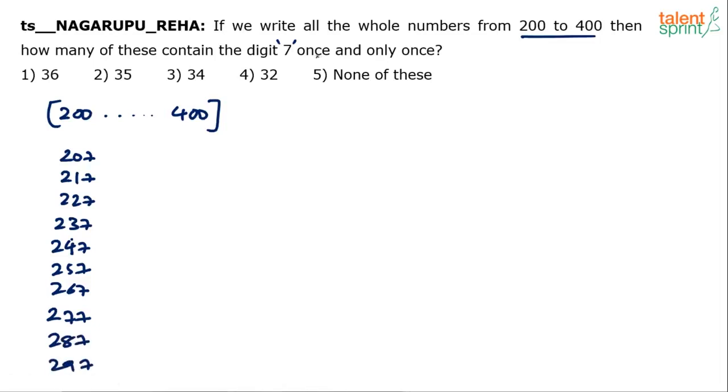But remember, it says once and only once. The digit 7 has to be there once and only once. So, obviously, the number 277 has to be neglected. You cannot consider this number. All the remaining here have got the digit 7 only once. 07, 17, 27, 37, 47, 57, 67, 87 and 97.